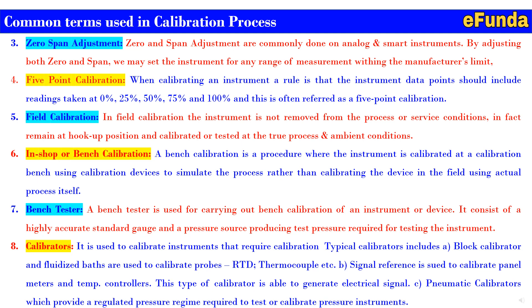Eighth is the calibrator, used to calibrate instruments requiring calibration. Calibration stations typically include: (A) a block calibrator and fluidized bath, used to calibrate probes, RTDs, and thermocouples; (B) a signal reference used to calibrate panel meters and temperature controllers — this type generates electrical signals; and (C) a pneumatic calibrator, which provides a regulated pressure regime required to test or calibrate pressure measuring instruments.